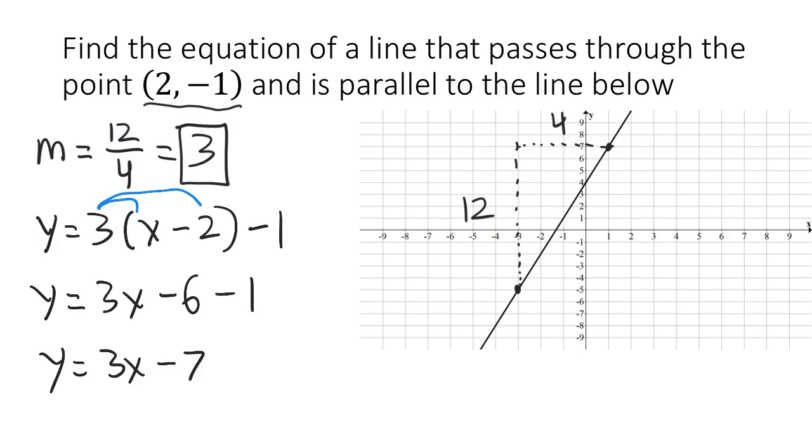So if you want, we can even graph our line now. We know that it has a y-intercept of negative 7, and it has a slope of 3. So we can go up 1, 2, 3, and over 1. And if we connect our dots, we should end up with a line that is parallel to the line that is already on the page.